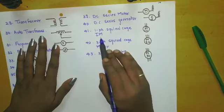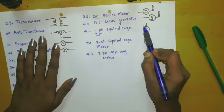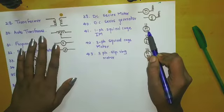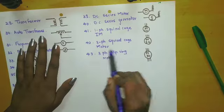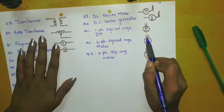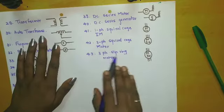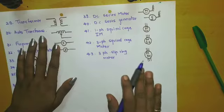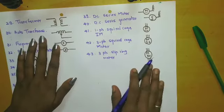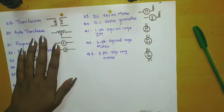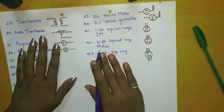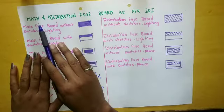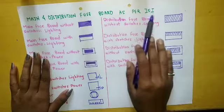Single phase squirrel cage induction motor — this indicates single phase, and this indicates the squirrel cage induction motor. Three phase squirrel cage induction motor — this indicates three phase. This is the slipring motor symbol. To remember the symbols, practice and remember them according to their names. Now we will move further and see the symbols of main and distribution fuse boards as per ISI.